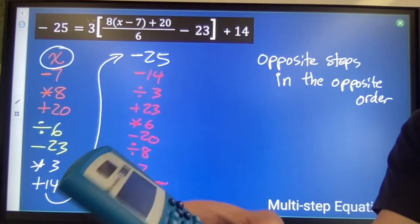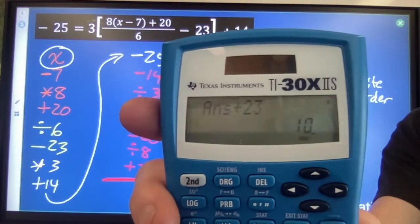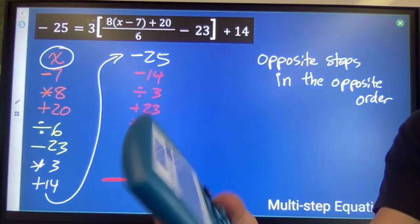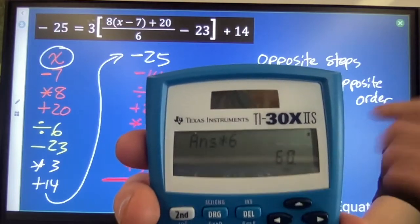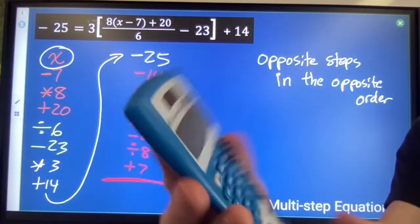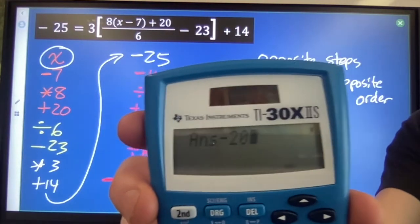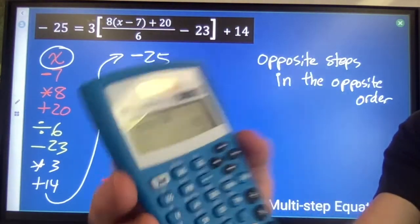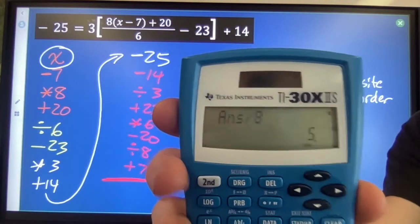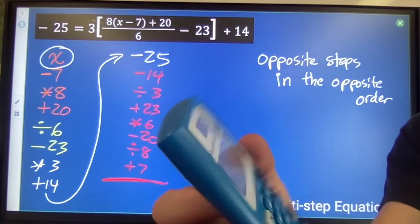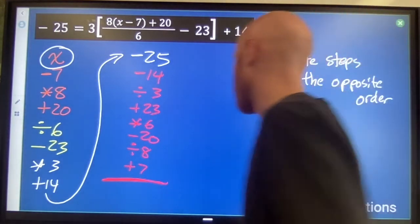Then plus 23, answer: 10. Times 6, answer. The most difficult thing in this is to make sure that you keep track of where you are. Minus 20, divide by 8, plus 7.